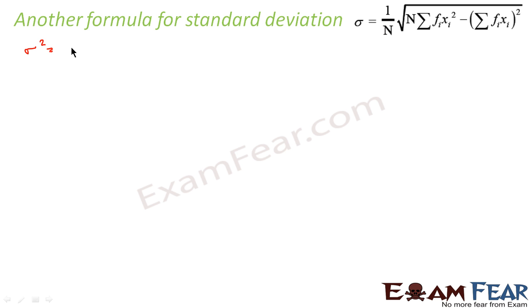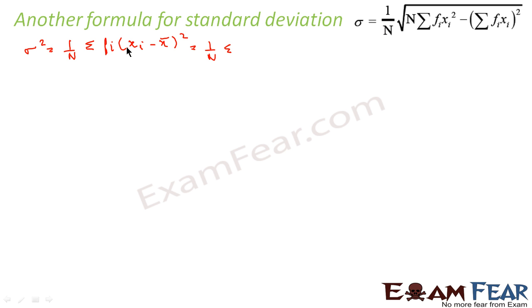This formula we know. We can write this as 1 by n sigma of (xi minus mean) squared. This is nothing but an a minus b square, so we can expand it as a squared plus b squared minus 2ab.